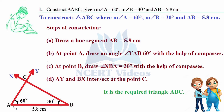Draw AB = 5.8 centimeters using a ruler and name the points A and B. At point A, draw angle YAB = 60 degrees using compasses: draw a semicircle, then without changing the radius, place the needle at the intersection on line AC — that gives you 60 degrees. Extend it with a ruler toward Y. At point B, draw 30 degrees by drawing a semicircle with the same radius.